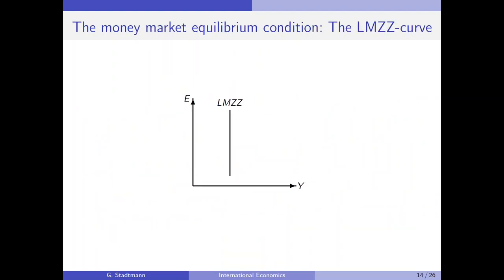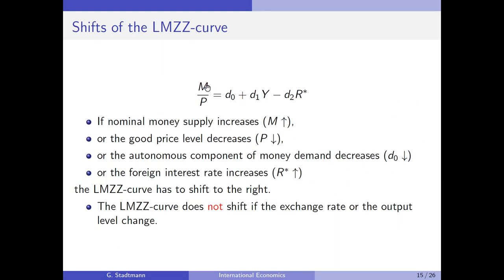What about the LMZZ curve? Yes, there is an M included in the LMZZ curve. When money supply increases, the left-hand side of the equation increases, so GDP must also increase for the equality to hold. Therefore, the LMZZ curve has to shift to the right — as stated in the bullet points: if nominal money supply increases, the LMZZ curve shifts right.